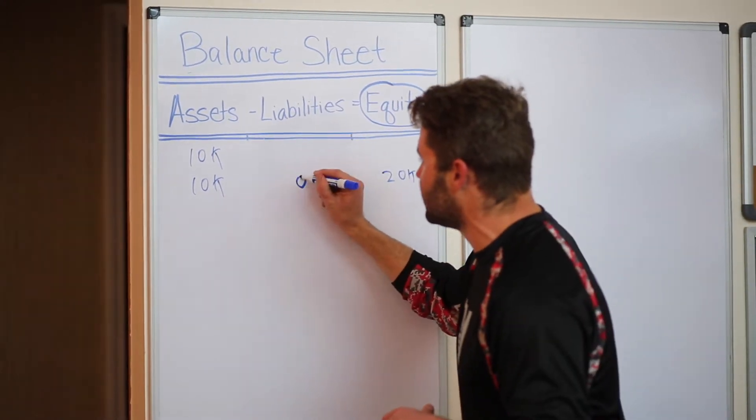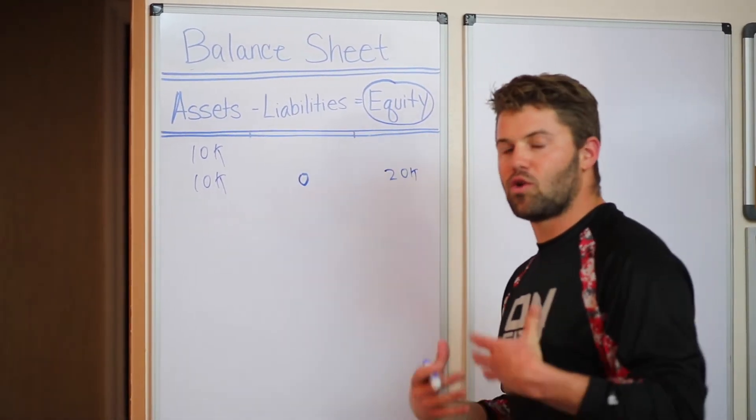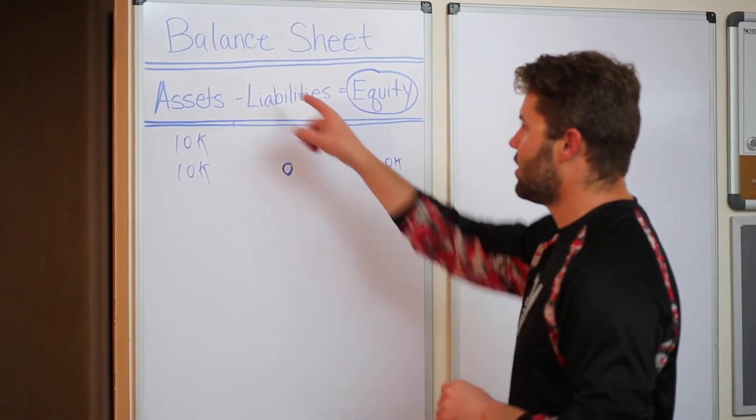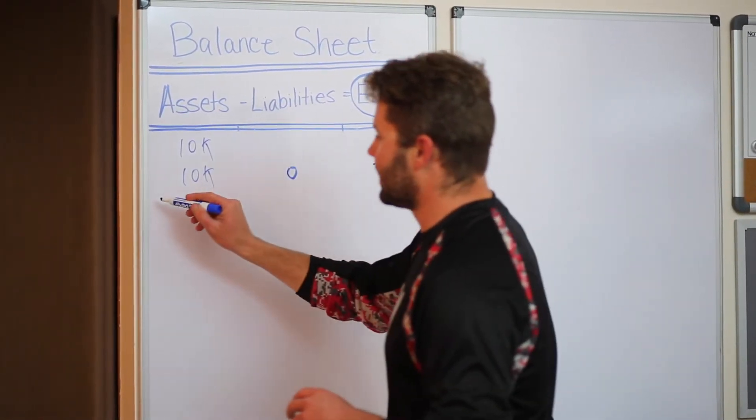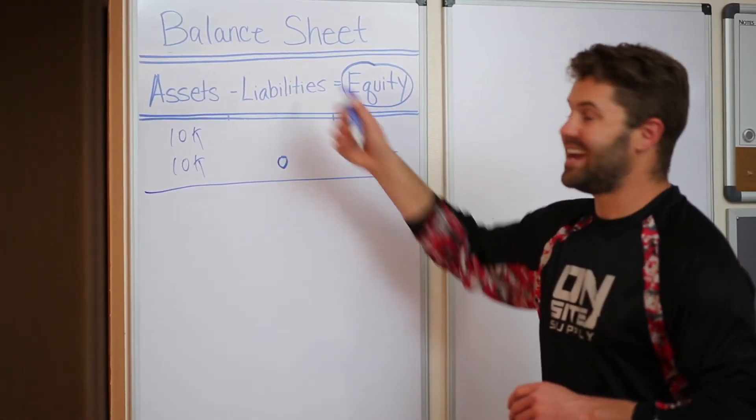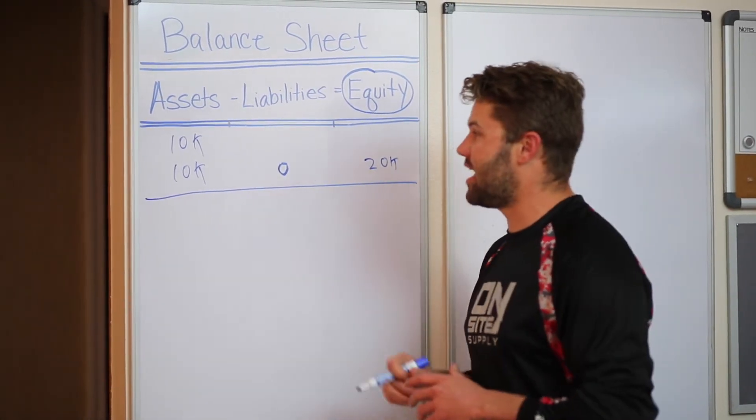Liabilities are zero currently. Now we want to go ahead and acquire the business for no money. Let me show you how we can do this with the balance sheet. We're gonna make a line here. We're gonna keep this super simple. We're going to add in the debt column, the liability column.